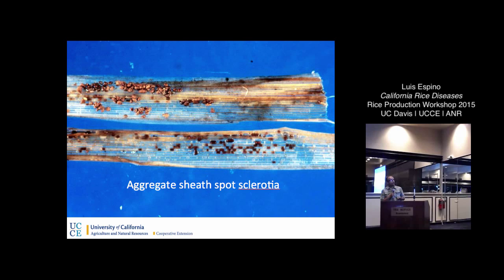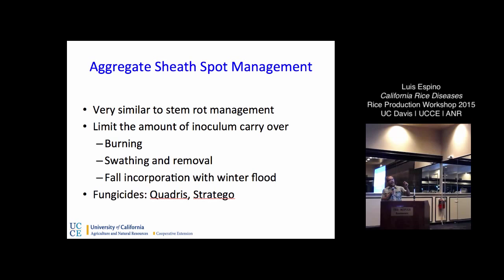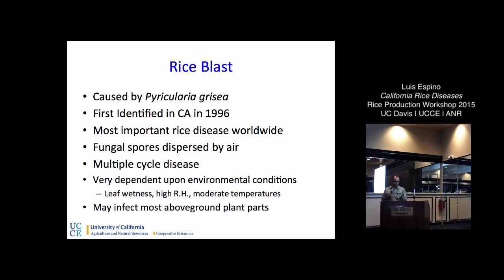Aggregate sheath spot can also reach the panicle, producing a blank panicle or no panicle at all. The sclerotia are a little different — more irregular in shape — and if you peel one of the lesions late in the season you'll start seeing them form. Management is similar to stem rot: reduce your inoculum source through burning, decomposing the straw, or removing the straw. Quadris and Stratego are labeled for aggregate sheath spot, but like stem rot, control with fungicides for these diseases is really not all that great.